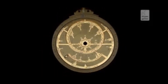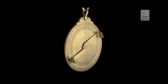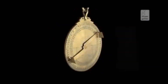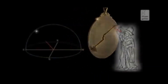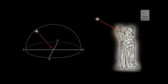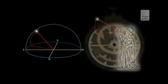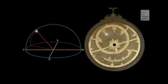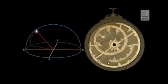The early astrolabe was supposedly invented by Apollonius of Perga around 220 BCE, which means that the astrolabe has been prevalent throughout history for over 2,000 years. Astrolabes can be purchased or built today and can be used with precision on our modern night skies.